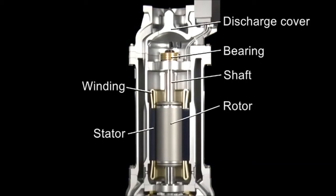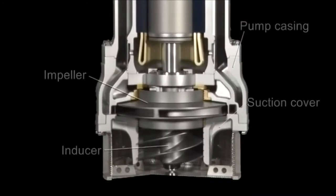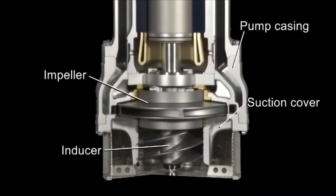Here are the LNG pump's main parts: the discharge cover, bearing, shaft, winding, rotor, stator, pump casing, impeller, suction cover, and inducer.